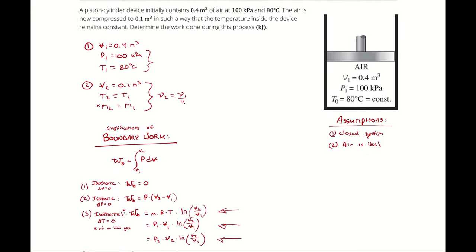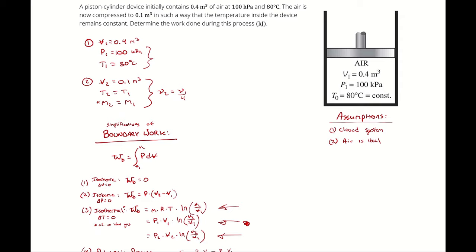I could go calculate the specific gas constant for air — look up the universal gas constant, look up the molar mass of air, divide the two, come up with a specific gas constant, use the volume to determine specific volume, come up with a mass, then multiply by the specific gas constant and temperature in Kelvin. Or I could just take 100 kilopascals times 0.4 cubic meters. Work smarter, not harder. By thinking through it, we cut several calculations and decrease the probability of rounding error.